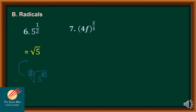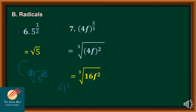Moving on, if I have 4f raised to 2 thirds, the index is 3 and the radicand is 4f raised to the exponent 2. Note that distributing 2 over 4f gives 4 squared times f squared. Since 4 squared equals 16, I have 16f squared under the radical. The final answer is the cube root of 16f squared.